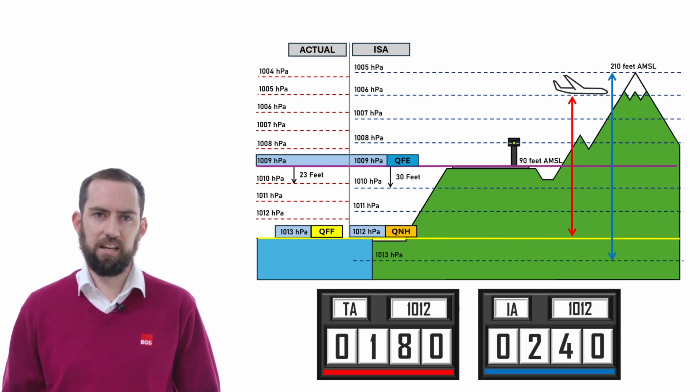If we adjust the setting on our altimeter to the QFF of 1013, we increase the altimeter's perceived distance between the 1005 pressure level, which is the ambient pressure it is currently experiencing, and the 1013 pressure level. There is a difference of 8 hectopascals, which multiplied by 30 feet per hectopascal means the altimeter will read 240 feet. So what this has done is actually made the problem worse.